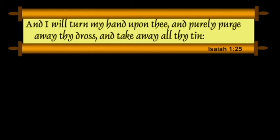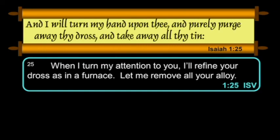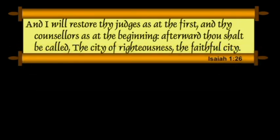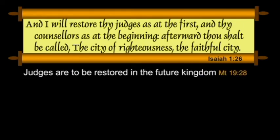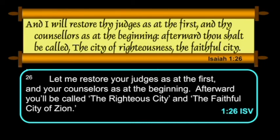"And I will turn my hand upon thee, and purely purge away thy dross, and take away all thy tin." The dross is mentioned in Ezekiel 22. The ISV: "I turn my attention to you. I'll refine your dross as in a furnace, and remove all your alloy." Verse 26: "And I will restore thy judges as at the first, and thy counselors as at the beginning. Afterward thou shalt be called the city of righteousness, the faithful city." Here's the ray of hope at the end of the tunnel — the judges are to be restored at the future kingdom, as Matthew 19 also talks about. The ISV: "Let me restore your judges as at the first, and your counselors as at the beginning. Afterward you will be called the righteous city, and the faithful city of Zion."